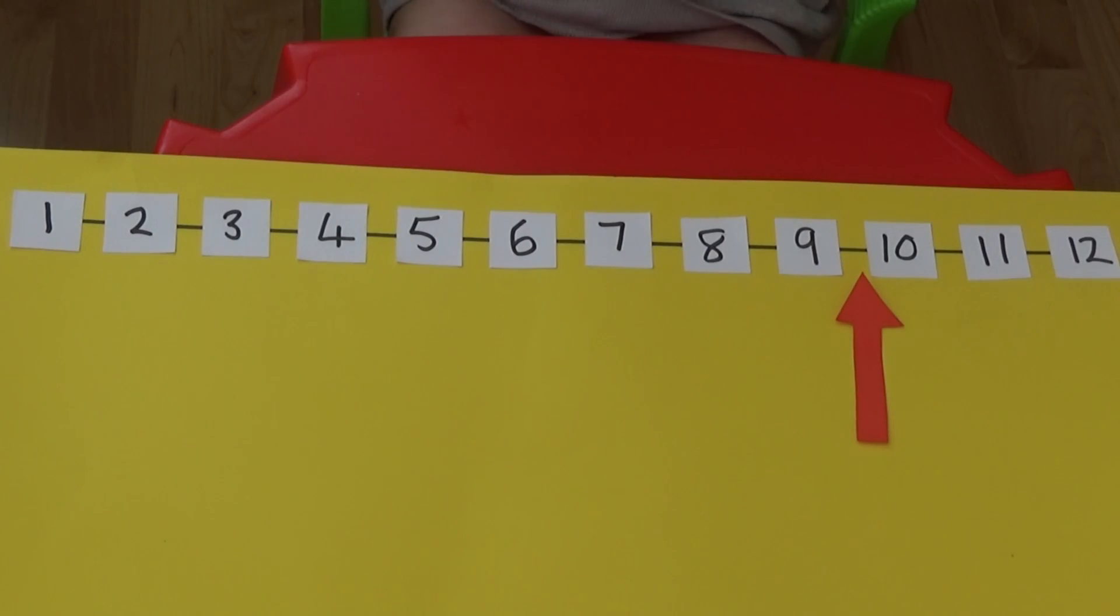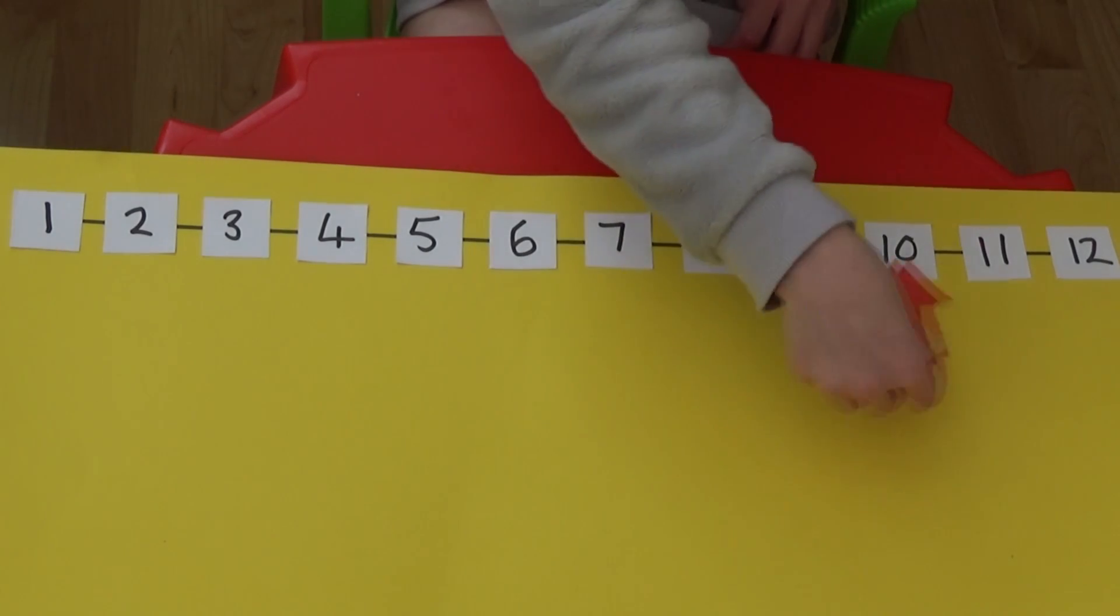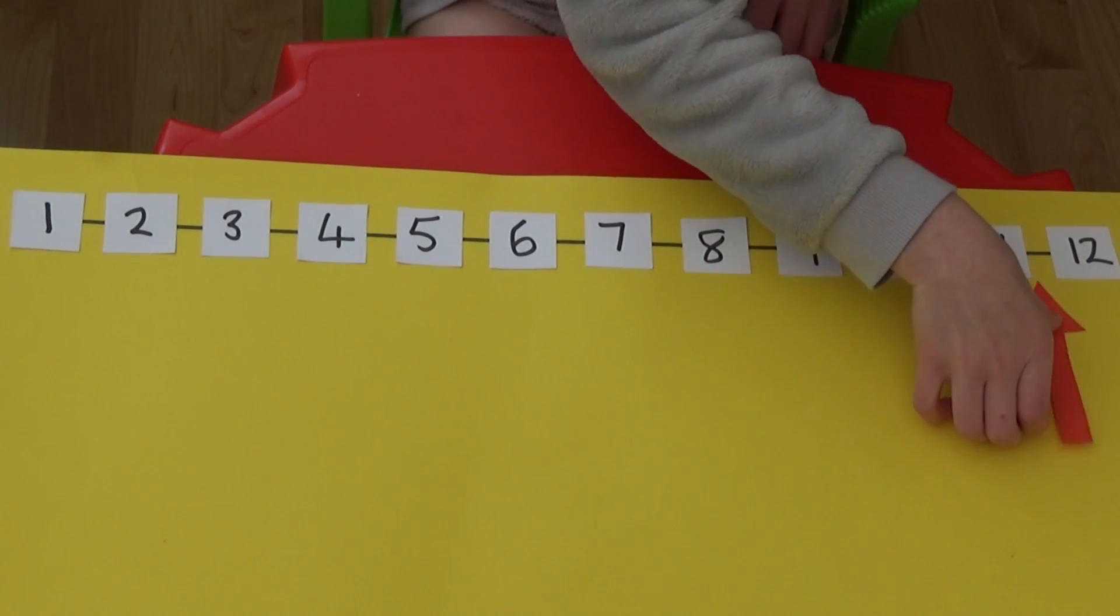If we look at a few more, here the hand is half way between the 9 and 10, so it must be showing half past 9. And here it is between the 11 and 12, so it must be showing half past 11.